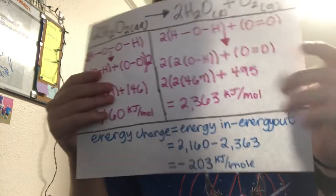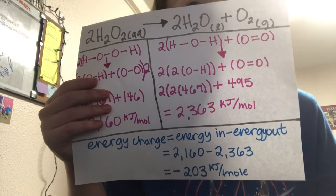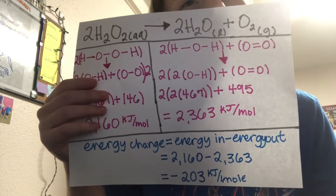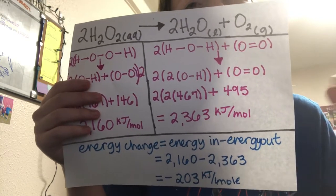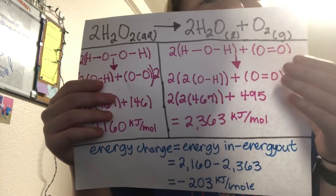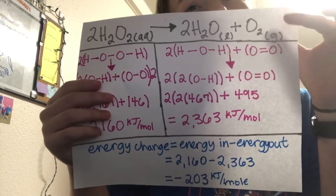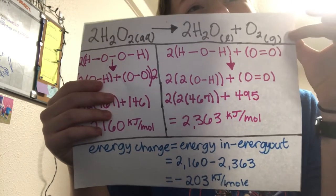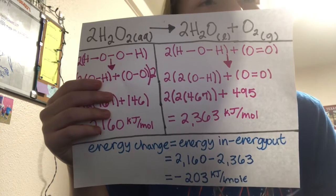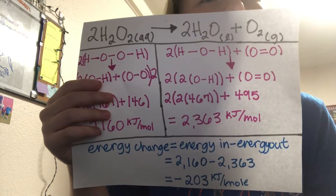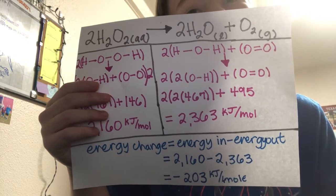For the product side, we have an H₂O molecule which is made up of two O-H bonds, plus an O₂ molecule which gives us an O-O double bond. We need to multiply the total for H₂O by two because there are two moles of it in the equation. So we have four times 467 plus 495, which adds up to 2363.